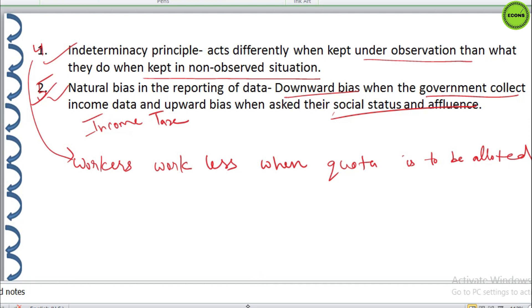And, on the other hand, they overstate the same if asked for social status to increase their influence. Generally, in psychological surveys, people tend to give what they think is correct answer rather than what they truly feel. So, all these points should be checked and considered to reduce the systematic biasness in your study.